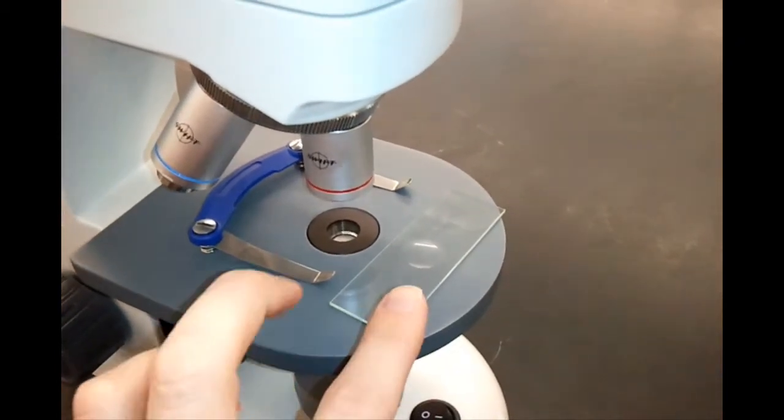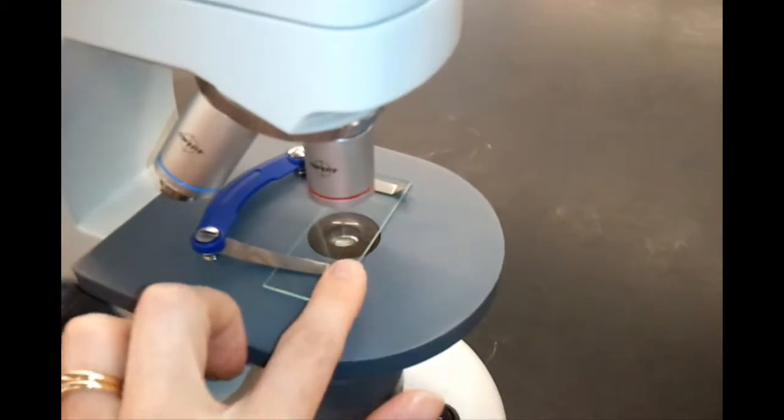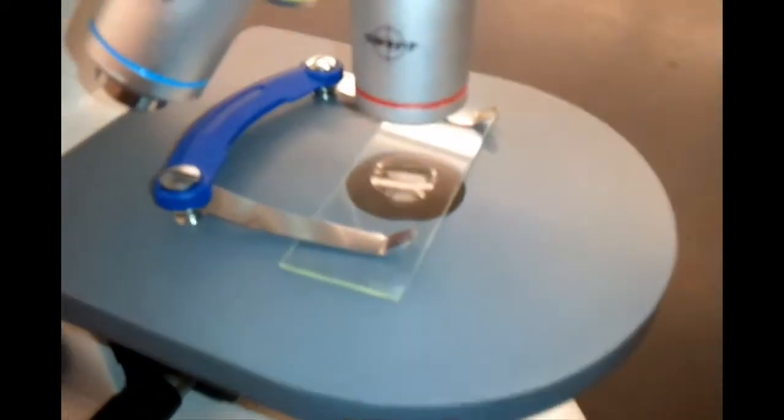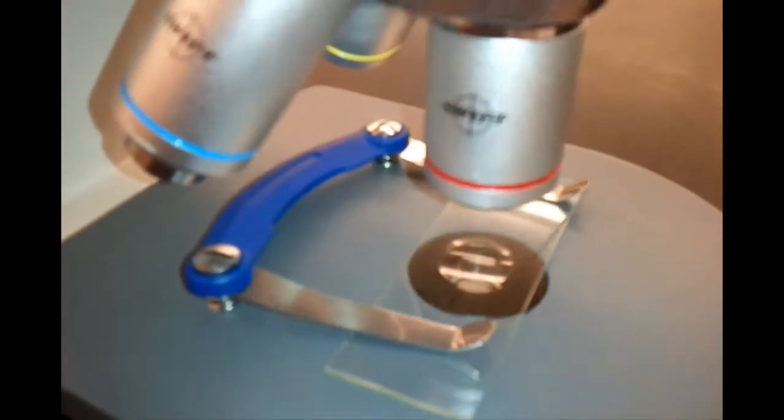The microscope stage holds slides for viewing. The stage clips hold the slide in place on the stage.